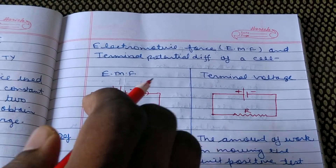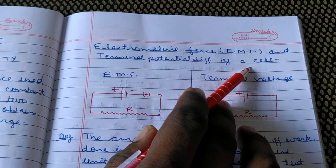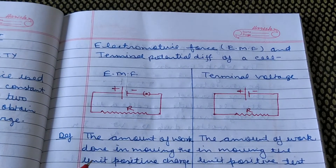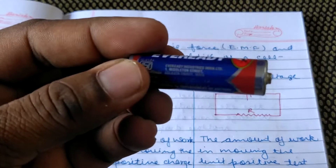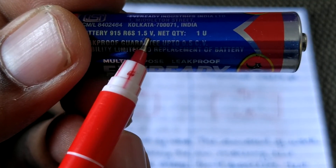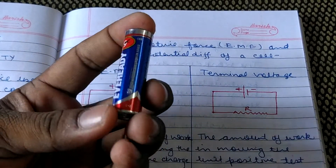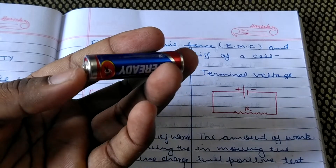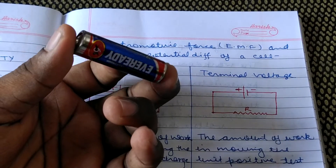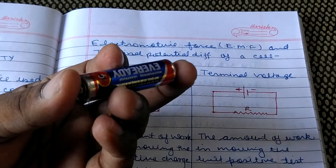Now we will discuss the terms related to cell: electromotive force (EMF) and terminal potential difference. If you have ever seen a cell, you can see a number written on its body — here it is 1.5 volt. This term is known as the EMF of the cell. EMF is the potential difference between the two terminals. If the cell is new, the potential difference between its two ends is 1.5 volt, and as you draw current from it, its EMF continuously decreases.